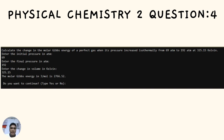For the last question in Physical Chemistry 2: Calculate the change in molar Gibbs energy of a perfect gas when its pressure is increased isothermally from 69 atm to 192 atm at 325.15 Kelvin. Enter the initial pressure of 69 atm, the final pressure of 192 atm, and the temperature of 325.15 Kelvin. The molar Gibbs energy is 2766.52 joules per mole.